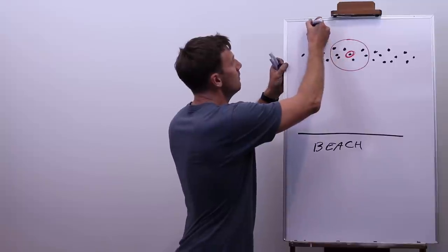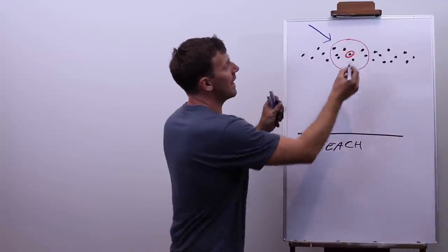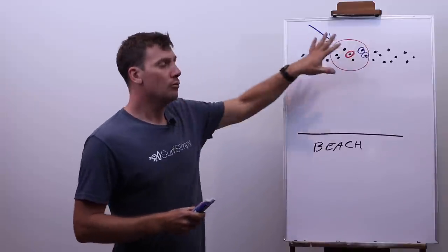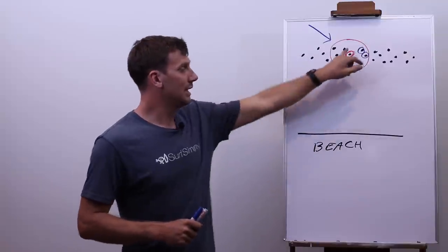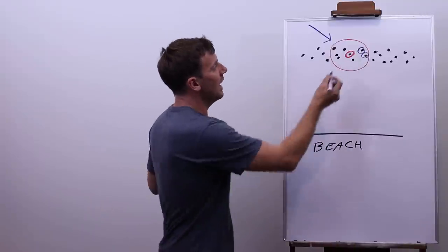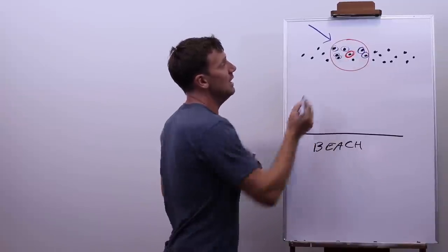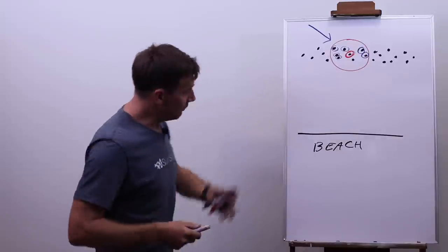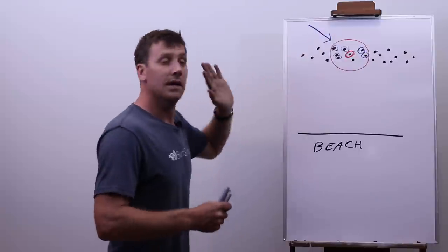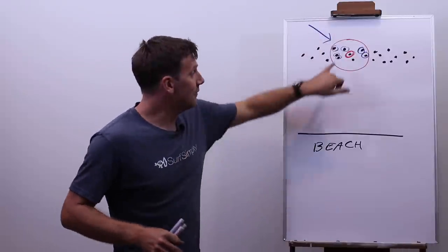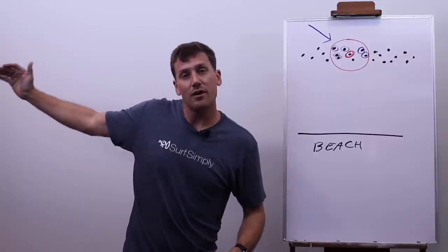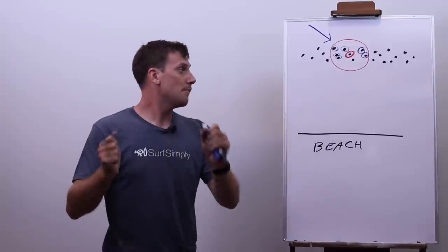So now when a wave comes along and I turn around, I can already start to eliminate some of them. Let's say that we had a left-hand wave peeling in towards the beach like this. Well, straight away, I can eliminate these two guys. I don't really need to worry about them because we've got priority. We're closer to the peak of the wave. We should be able to paddle into this wave. Not that we need to forget about them completely. We'll check on them. But right here, right now, we don't need to worry about them too much. What we do need to do is as we turn around, we need to look over our right shoulder at these guys here and see if any of them are paddling. Because they're closer to the peak than us. They're going to have priority.